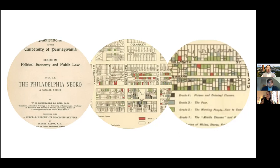His first position was at Wilberforce in Ohio, a historically Black institution, where he met Nina Gomer Du Bois, and they married and moved to Philadelphia. After that, he secured a position at Atlanta University, now known as Clark Atlanta. There he reached out to scholars at historically Black colleges to find images of the kinds of education and opportunities African Americans at these institutions were experiencing — from banking to accounting to the sciences and humanities.